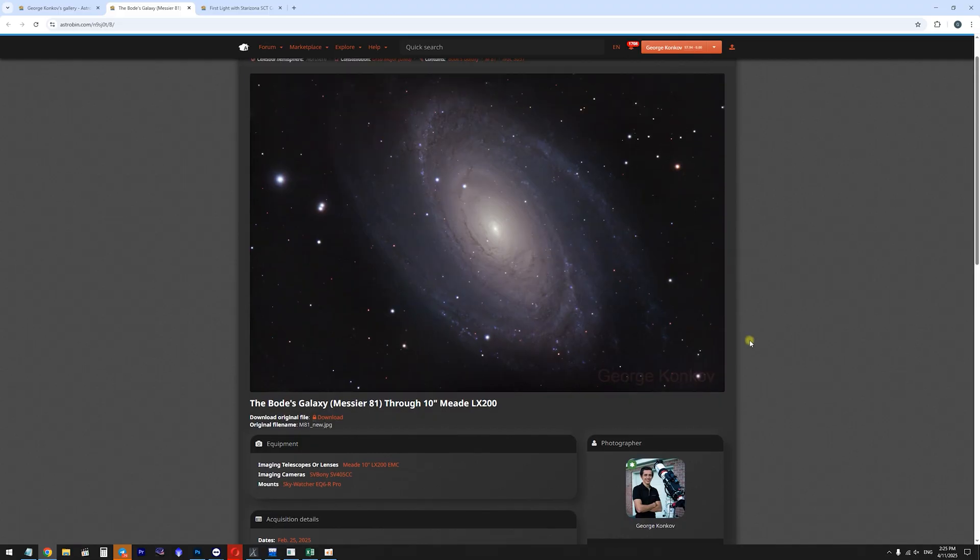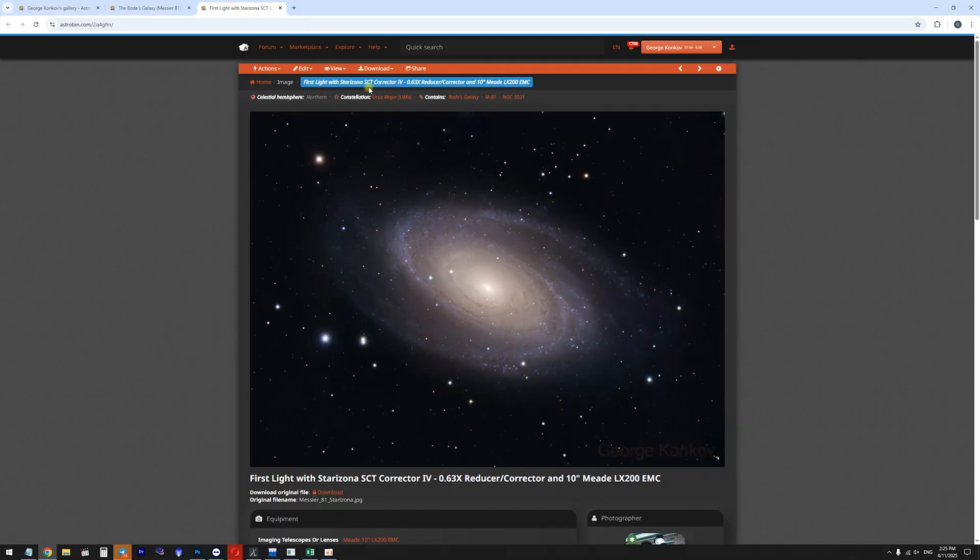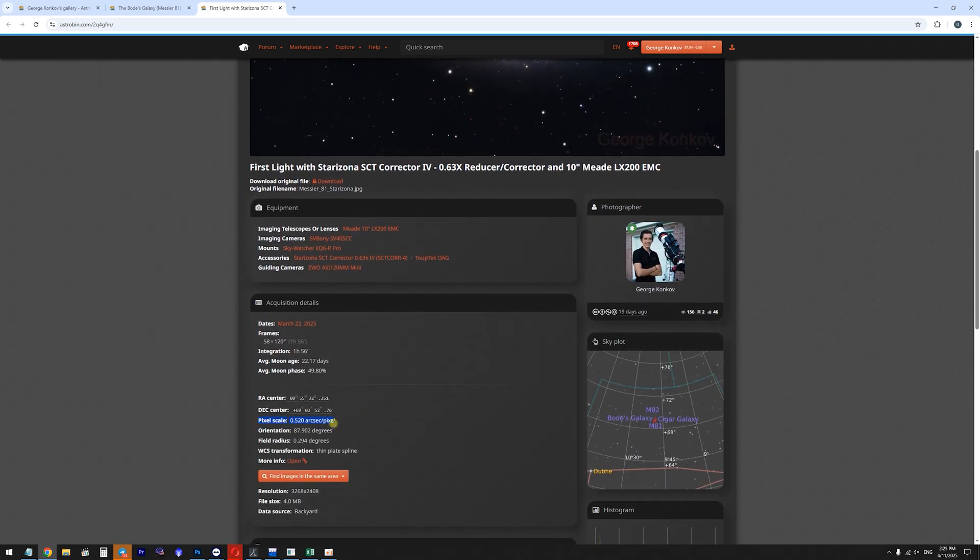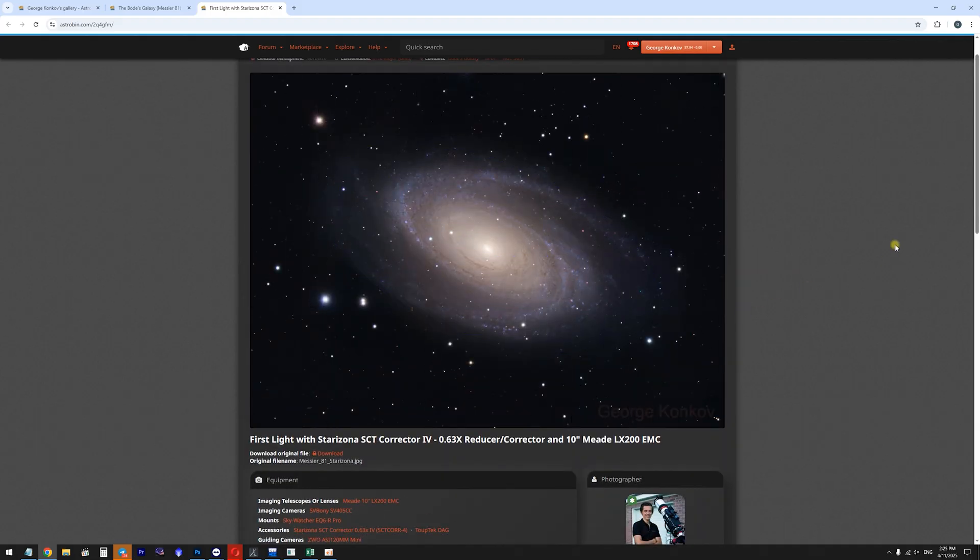You see, the average seeing might vary from one to three arcseconds, so in most cases you won't resolve that level of details. And that's why it makes sense to use reducers. And here is my image of Messier 81 Galaxy taken with Starizona reducer. And if we're going to look at the pixel scale, it's still below one arcsecond, which is 0.520 arcseconds per pixel. While it's still below one arcsecond, I get much more light for the same amount of exposure time.